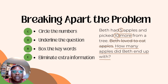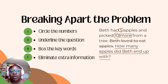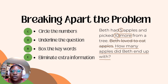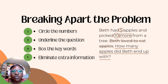Here is the word problem: Beth had five apples and picked 10 more from a tree. Beth loved to eat apples. How many apples did Beth end up with? So the first thing we're going to do is C — circle the numbers. We have the number five, circle, and number 10, circle.